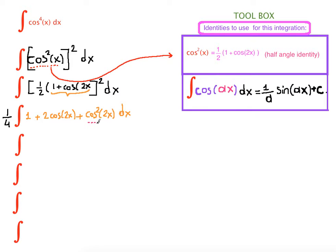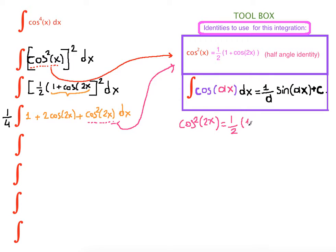Our next step is to apply the half angle identity again. What is cosine squared of 2x? If we apply the half angle identity, it's going to be one half times one plus cosine of 4x, because we are doubling this angle in the half angle identity.